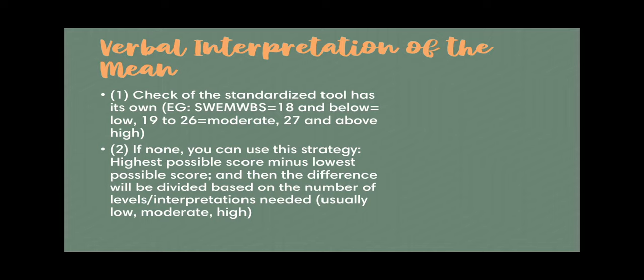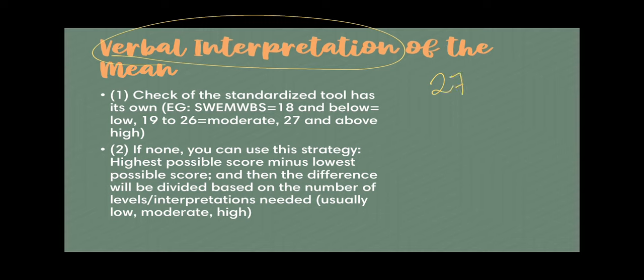For means, usually in thesis work you will need to verbally or qualitatively interpret the mean. For example, when you get a mean of 27.5, what does 27.5 mean? There are two ways to identify what 27.5 means. First, you try to check the standardized tool or the journal developer and check whether they have already cited cutoffs for certain variables. For instance, in the short Warwick-Edinburgh mental well-being scale, they already indicated the values for saying whether a mental well-being score is low, moderate, or high.